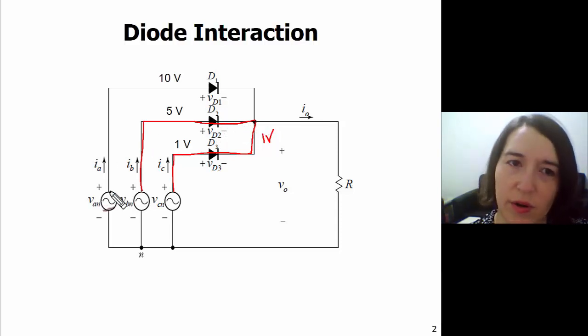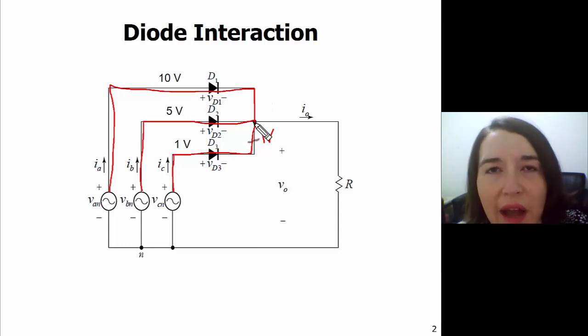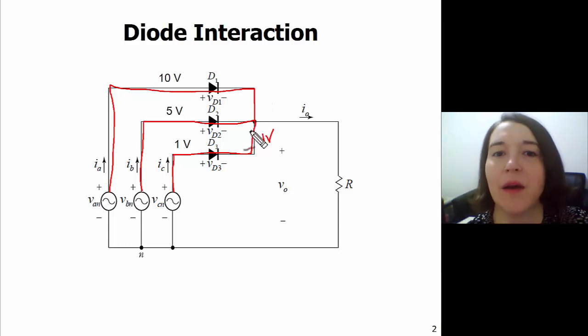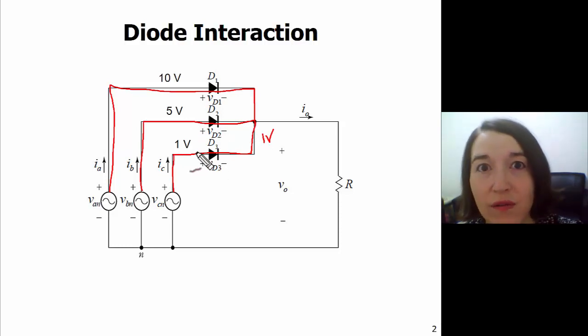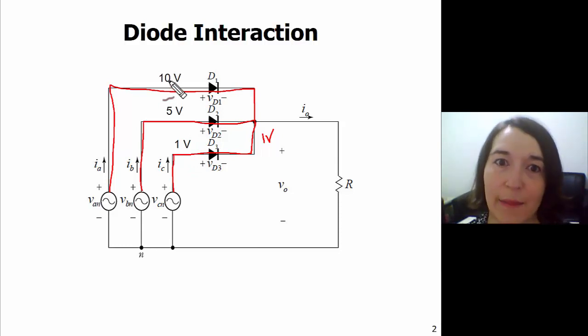But that can't happen because Kirchhoff's voltage law says that one node can only have one voltage. But if all three of these diodes are on, it has to be simultaneously 1 volt, 5 volt, and 10 volt. That cannot happen. So this is not what is going to happen.